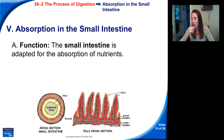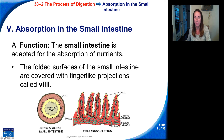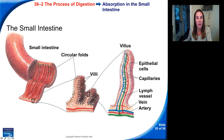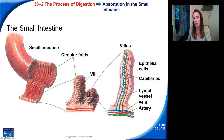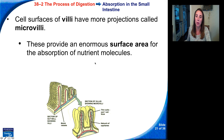In the small intestine, after all that chemical digestion breaks down carbs, lipids, fats, and proteins, these nutrients in their simple molecular form can be absorbed into the bloodstream. The small intestine is adapted for the absorption of nutrients. Its folded surfaces are covered with finger-like projections called villi, which line the inside of the intestine and have blood vessels running into them so that food can pass through into the bloodstream. The cell surfaces of the villi have even more projections called microvilli, which provide an enormous surface area for the absorption of nutrient molecules.